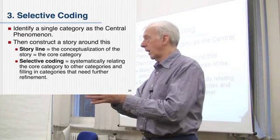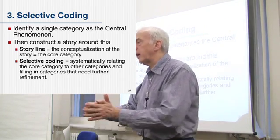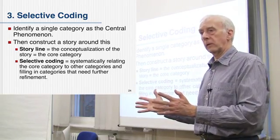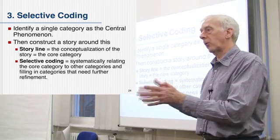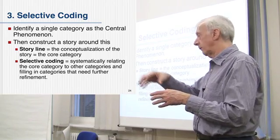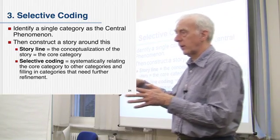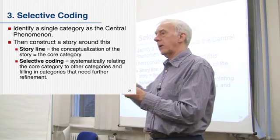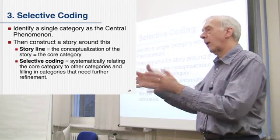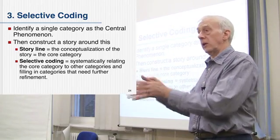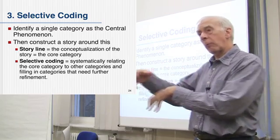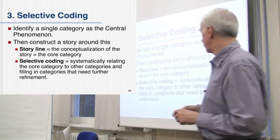Dealing with the situation at the time when they were young was one thing, but later on — 10 years later — maybe the core is about dealing with feelings. And that might be the core category, around which you can then build a storyline that involves things like their strategies for doing that, how they dealt with other family members, how they dealt with the memories, and so on, all related to dealing with feelings as a core category.